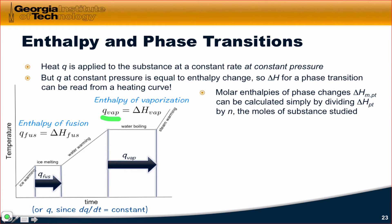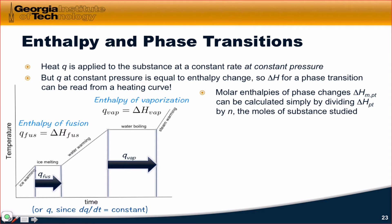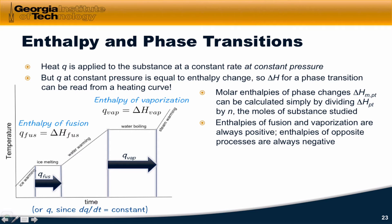The M denotes molar and PT stands for phase transition. In general, we can do this for any phase transition we can set up experimentally. Importantly, these enthalpies of fusion and vaporization — which correspond to melting ice and boiling water — are always positive, because we've got to input energy into the system to cause it to melt or boil. The opposite processes, condensation of steam and freezing of water, have enthalpy changes that are always negative, since these processes release heat to the surroundings.